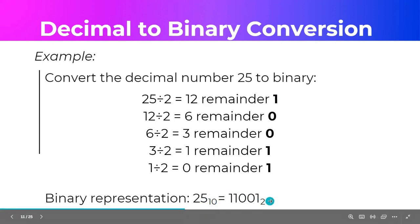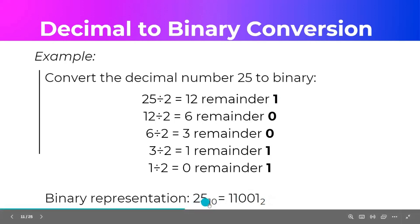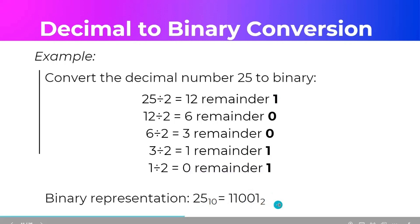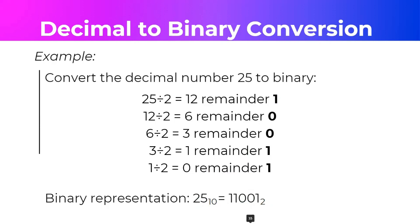These bases are our references to determine which number system we are in. So 25 base 10 is decimal, and 11001 is base 2, meaning it's the binary equivalent. So 25 base 10 is equal to 11001 base 2.